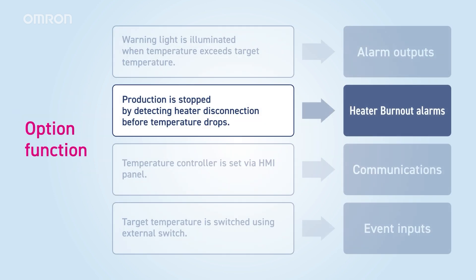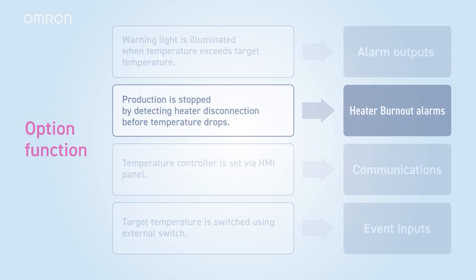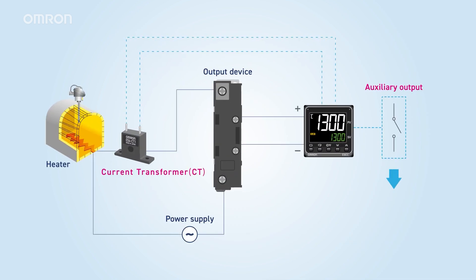Next, look at the heater burnout alarms. The current flowing to the heater is measured by a current transformer, and in the event of a heater burnout, an alarm is output via a relay signal from the auxiliary output terminal. This system detects heater burnout early, allowing the equipment to be stopped in time to prevent defective products.